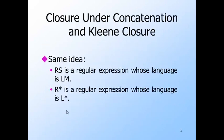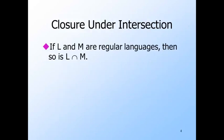The same idea works for concatenation and closure. Remember to draw parentheses around R and S if they are needed. For example, if R is 0 plus 1 and S is 0, then you need to write the expression with parentheses around the 0 plus 1; otherwise you'll get the wrong language. You don't need the parentheses around the 0.